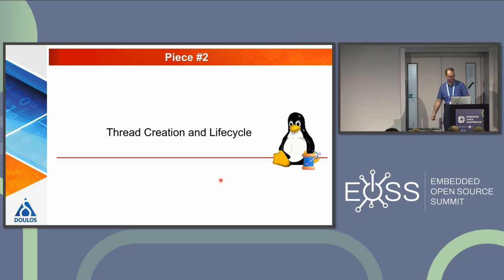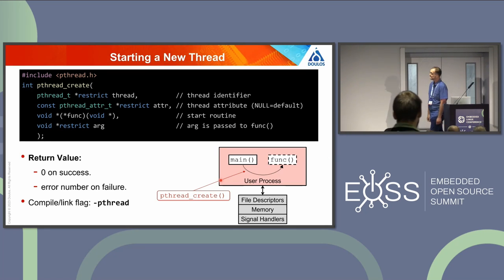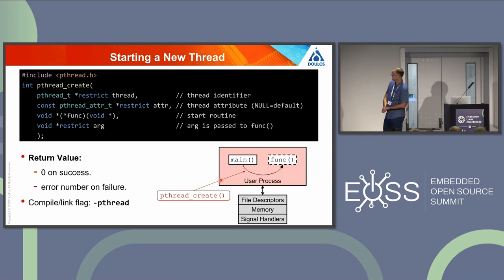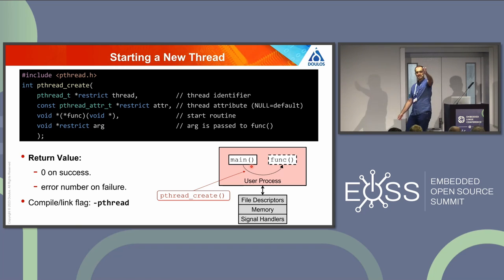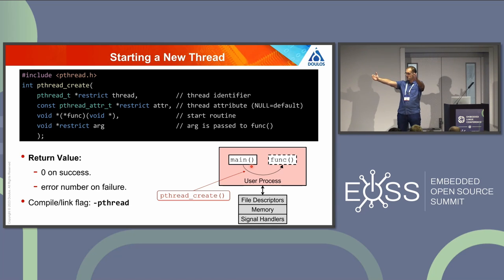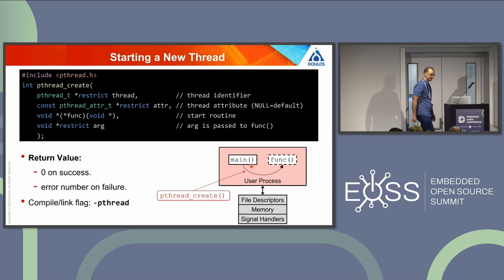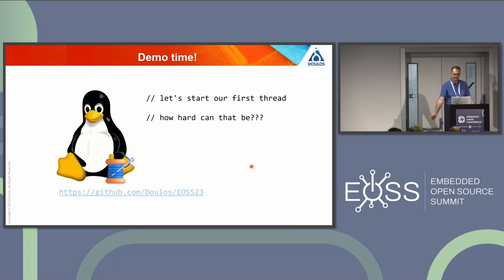We have now achieved the first easy piece. Let's move on to thread creation and thread lifecycle. There is an API — it looks quite straightforward. We need to include a header file, we need to call pthread_create. There are four parameters: thread ID, thread attribute, start function, and we can pass an argument to the start function. Here I have main — that's my main thread of execution. At some point I call pthread_create, and then I will have two threads of execution: the main, and the start function passed as an argument. Let's demo that. Let's start with first thread — how hard can it be?